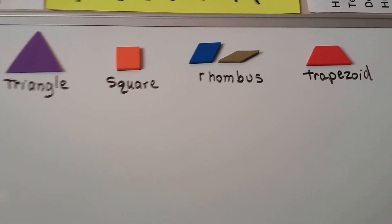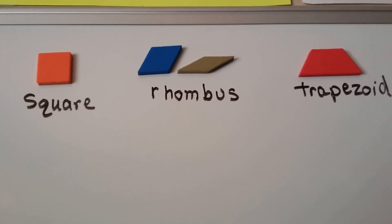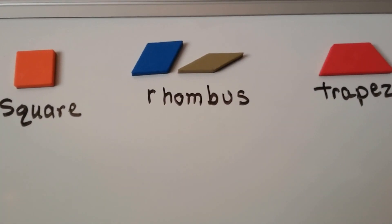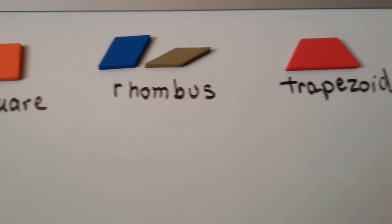A rhombus, that's a rhombus. It has four equal sides and it kind of looks like a slanted square, doesn't it? That's a rhombus.